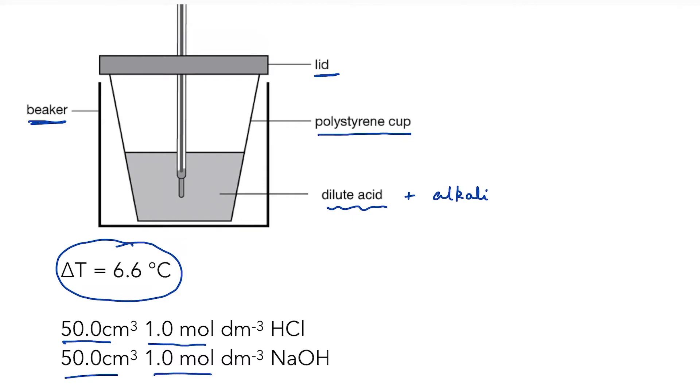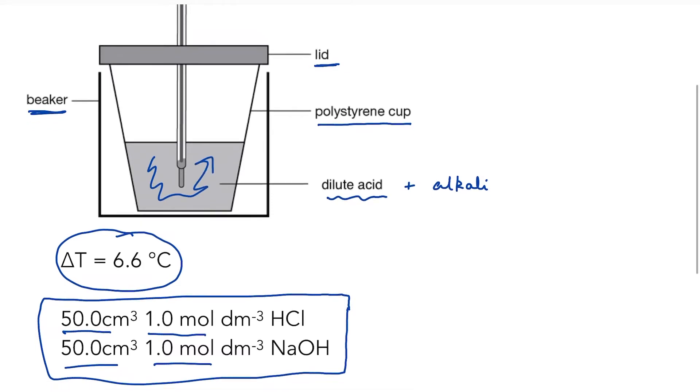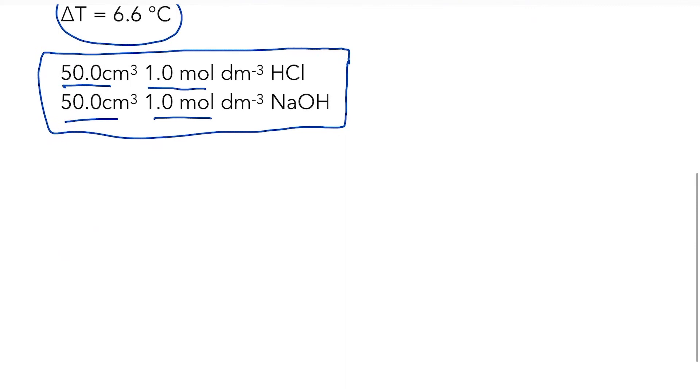So the first thing that I have to do is work out how much energy was transferred from my system, that is the neutralisation reaction, to the surroundings, in this case water, the water in my polystyrene cup. So I'm going to use exactly the same equation, Q equals mcΔT. And you are expected to know this equation, where Q is the energy transfer and that's in joules.